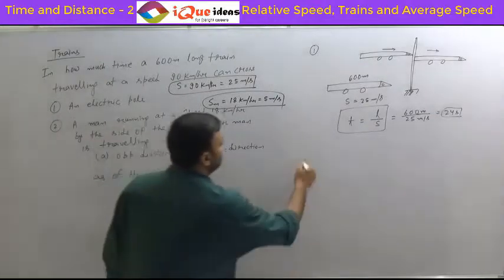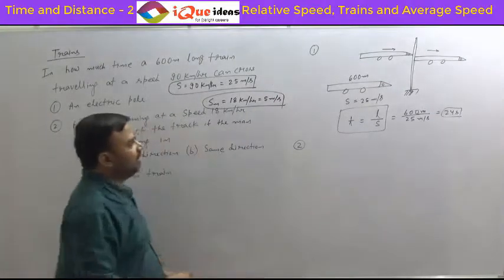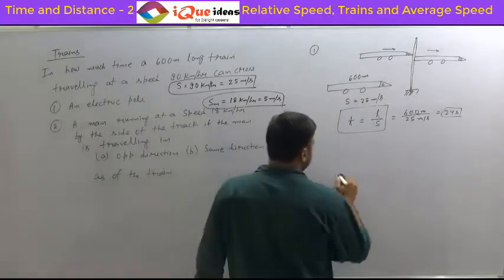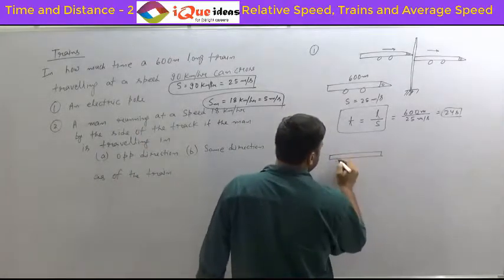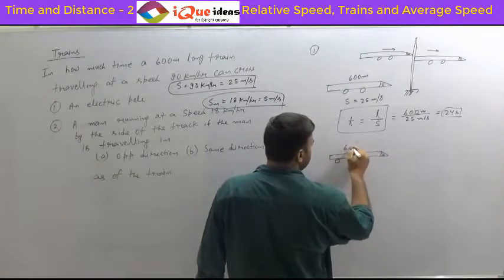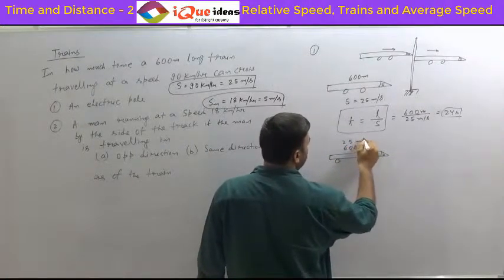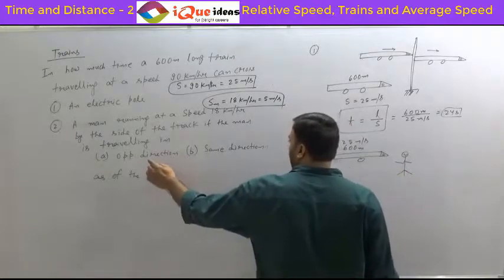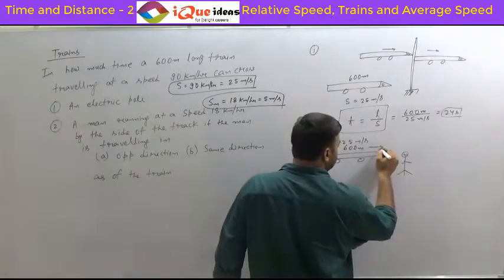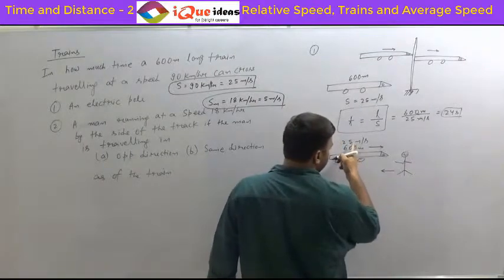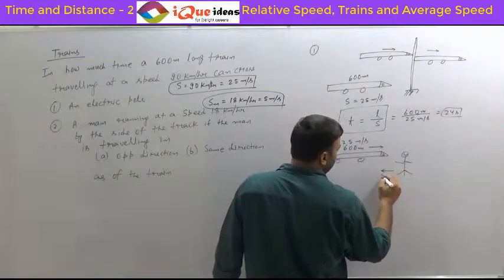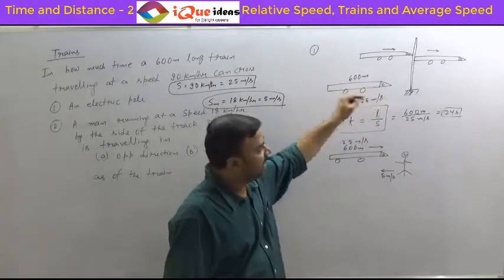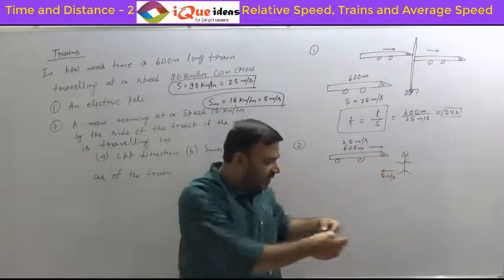Now for the second case — instead of a pole there is a man, so it's like the pole has started moving. This is the train, 600 meters long, at 25 meters per second. There is a man at 5 meters per second. In the first sub-case, if he is moving in the opposite direction, both the train and the man are contributing toward crossing.